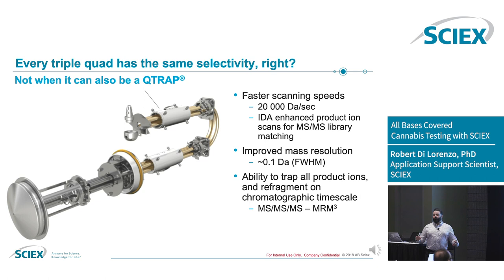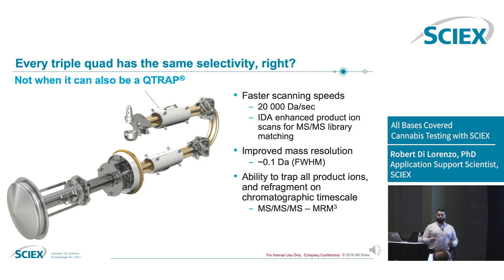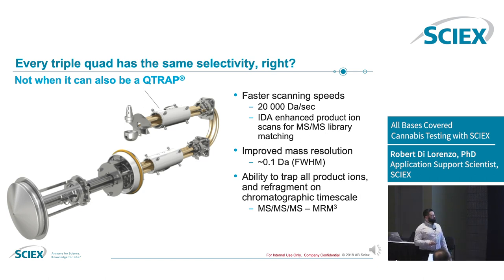The Q-Trap won't improve your overall raw sensitivity, but it allows for additional flexibility when you need it. It allows for ultra-fast scanning speeds where you can do information-dependent analysis to get triggered product ion scans. You get a little bit of improved mass resolution and the ability to trap all product ions and re-fragment them on the chromatographic time scale. This is what I'm going to be focusing on here — doing something called MRM cubed, or MS³.